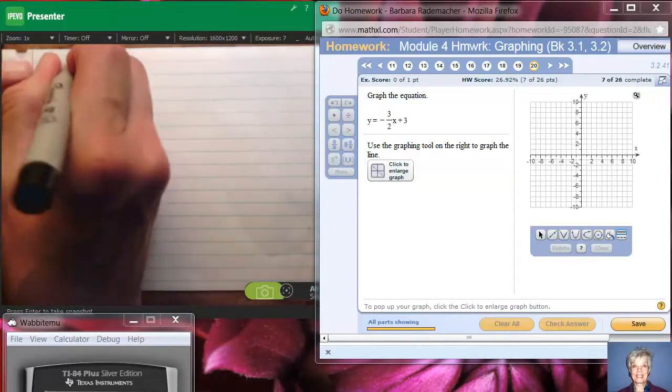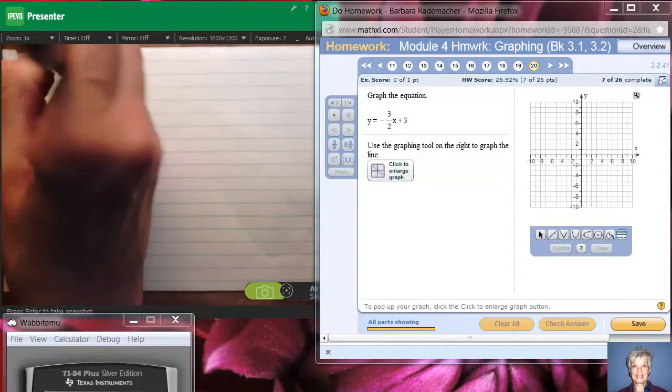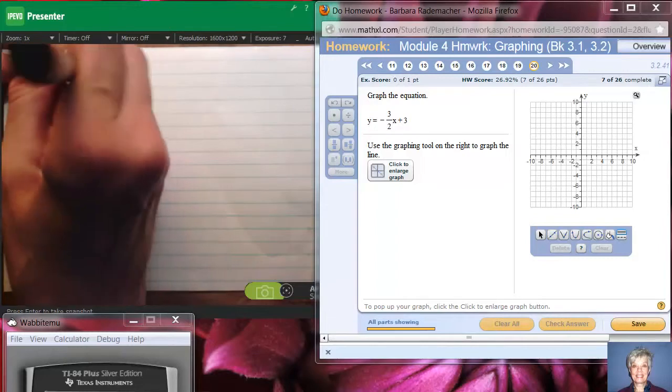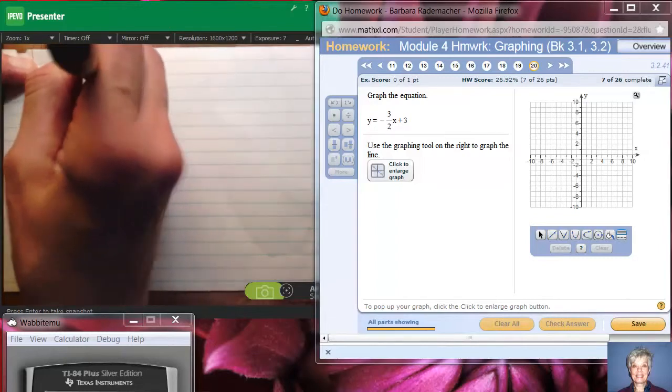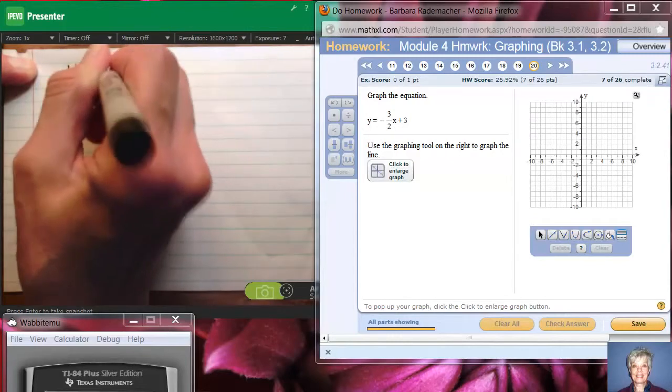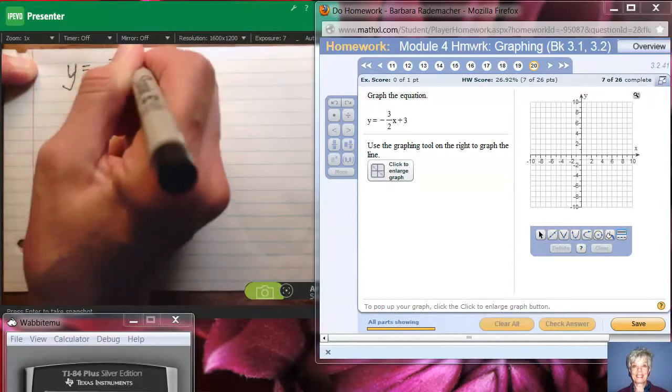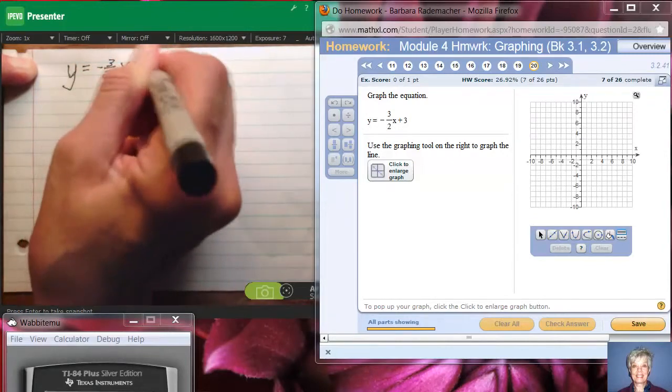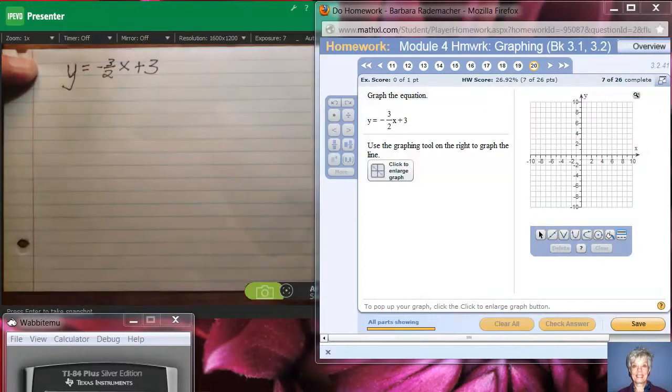This is an equation in what we call slope-intercept form. It's one of the two forms of an equation, and we have y = -3/2x + 3. Okay, now we're going to get points on this line.